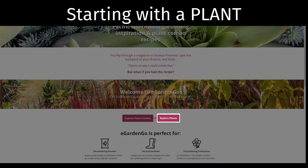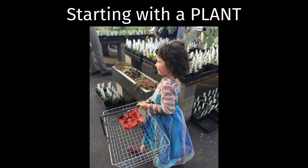Where are they starting from? Is there a plant they'd like to build upon, one that they have in their garden already? Perhaps they told you about it, or it's sitting in their basket begging for company. In this case, let's presume that we've decided to start with Heuchera 'Fire Alarm.'